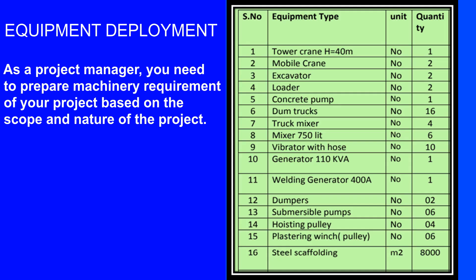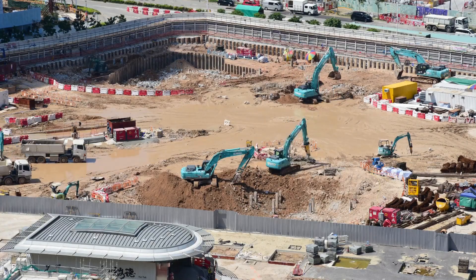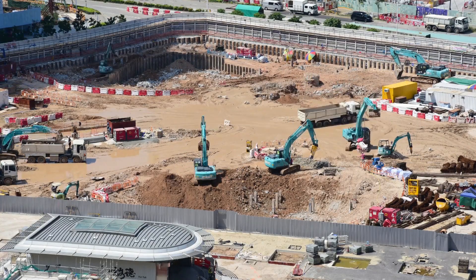When it comes to equipment deployment, as a project manager you need to prepare the machinery requirement of your project based on the scope and nature of the project. Make sure that the equipment satisfies the minimum bid requirements provided in your contract document. Out of the total equipment demand, you may deploy prioritized machinery during mobilization time.